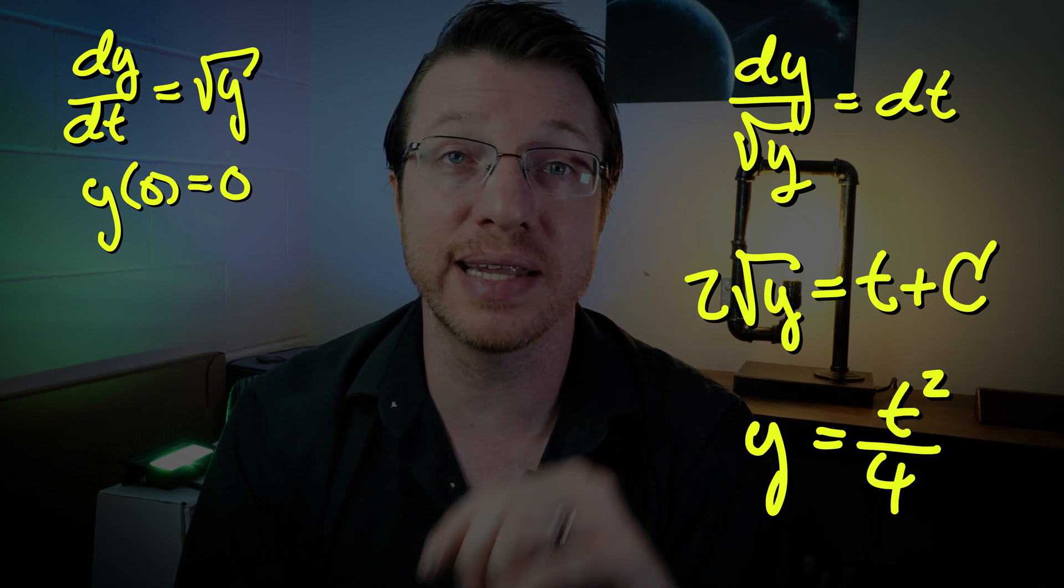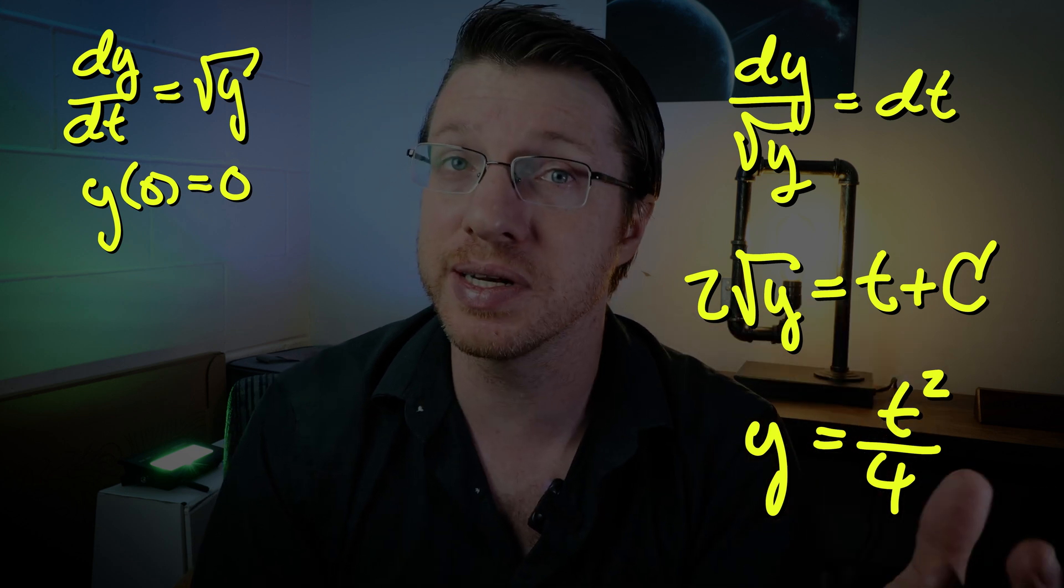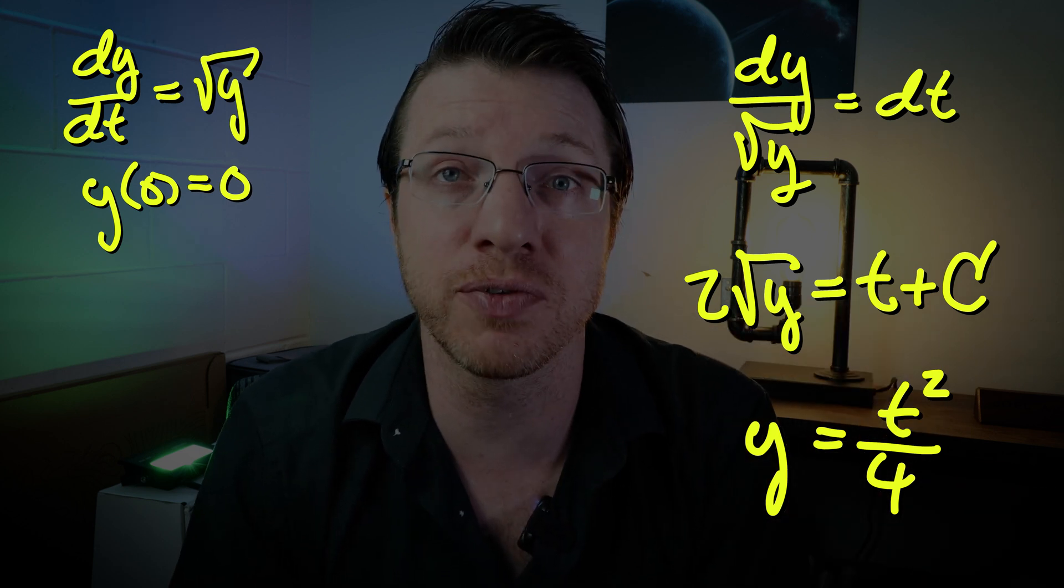Very quickly, you can verify that the derivative of this function is indeed the same as the square root of this function, and thus it satisfies that differential equation. Now, Picard's iteration should help us find a solution. But which one will it find?